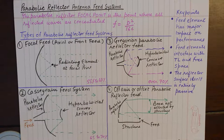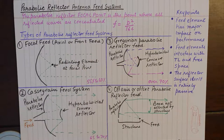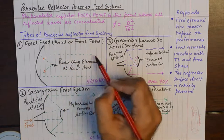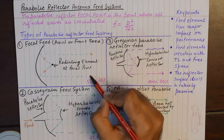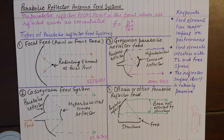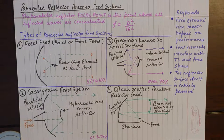The parabolic reflector converts those radiations in the form of spherical wavefronts into planar wavefronts. In simpler words, it converts all the waves which are omnidirectional in nature into a super directive parallel wavefront. The working of the parabolic reflector antenna is already covered in the first part of the tutorial. In this tutorial, we are going to study the types of parabolic reflector feed systems.